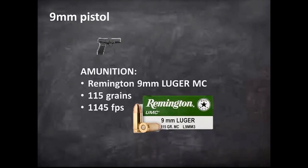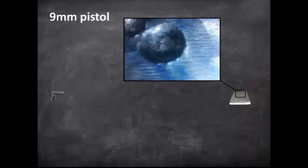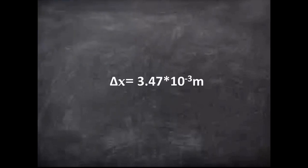That was a 9mm pistol firing Remington 9mm Luger metal cased. Each one of these weighed 115 grains and had a muzzle velocity of 1145 feet per second. Upon observing the impact crater, we measured the diameter to be 14.98 millimeters and the depth to be 3.47 millimeters. This gives us a displacement of 3.47 times 10 to the negative third meters.